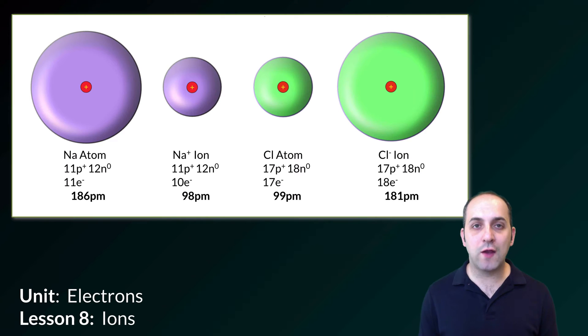Hi and welcome to Lesson 8 here in our Electrons Unit, actually our final discussion in our Electrons Unit. Here we're going to talk about ions. What I'm showing you in this image are two atoms, sodium and chlorine, sodium in purple, chlorine in green, and the ions that they form.